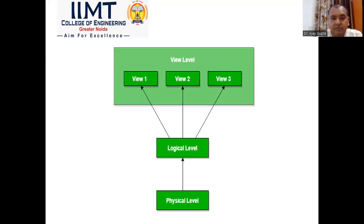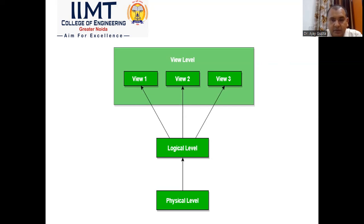In the diagram, the three levels are shown. At the bottom is the physical level, where minimum hiding occurs. Then the logical level. On top is the view level, where we have different views of the same database as per the requirements of different users — hiding the maximum at this level.